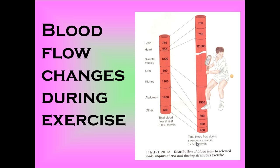If we explain each part here: with the brain, the amount of blood going to the brain remains constant. The reason for that is the brain needs a constant supply of glucose and oxygen, and to have CO2 removed, so it can function properly. And so the blood supply to the brain, regardless of exercise, never changes.